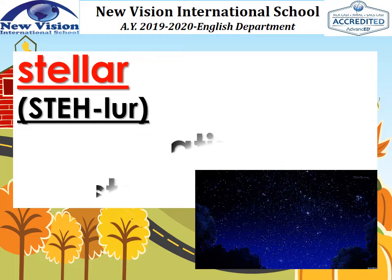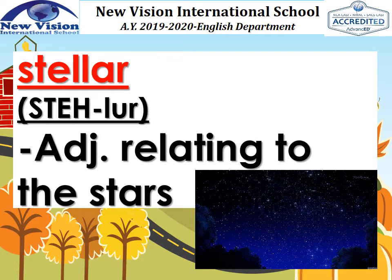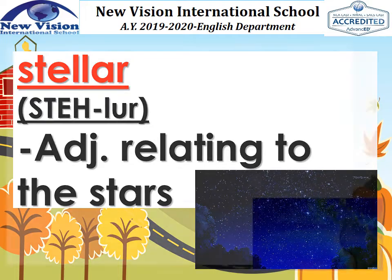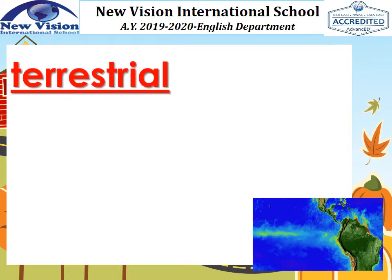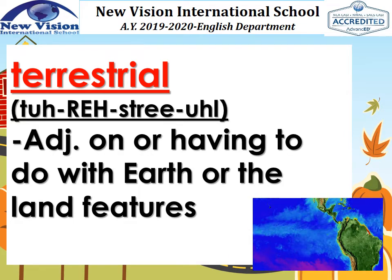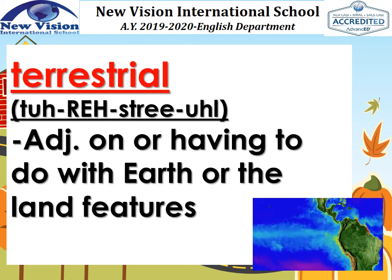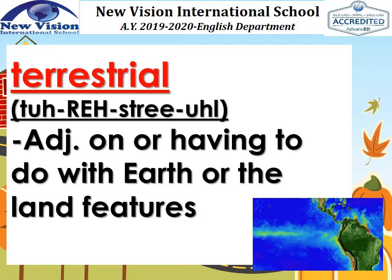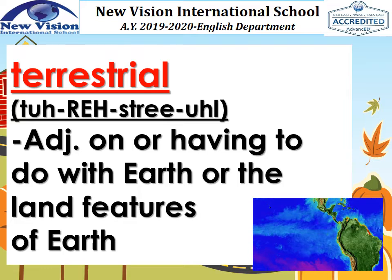The second word, we have the word stellar. This is an adjective which means relating to the stars. Say, stellar. Excellent! Our next word, terrestrial. Its part of speech is an adjective which means on or having to do with Earth or the land features of Earth. That's terrestrial.